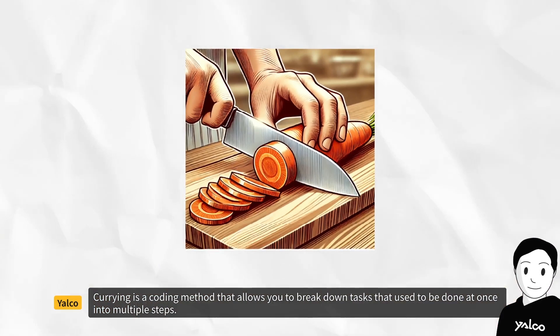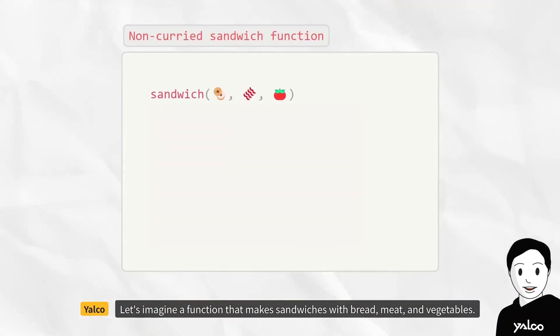Currying is a coding method that allows you to break down tasks that used to be done at once into multiple steps. Let's imagine a function that makes sandwiches with bread, meat, and vegetables.